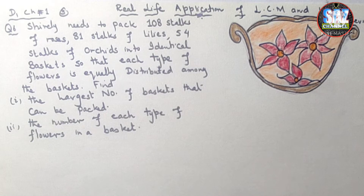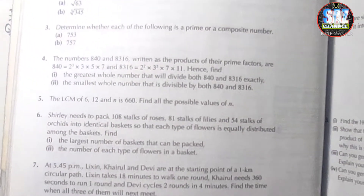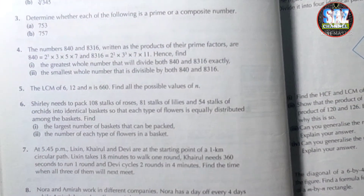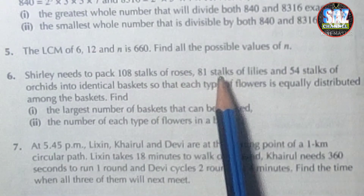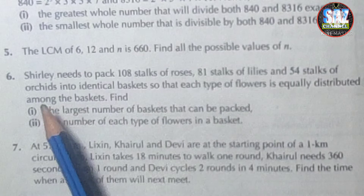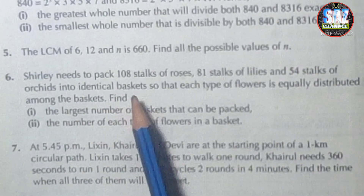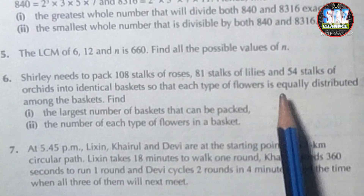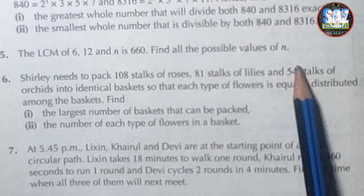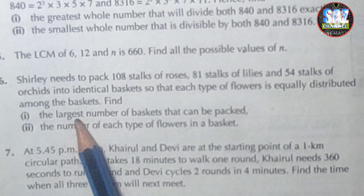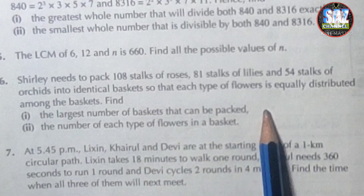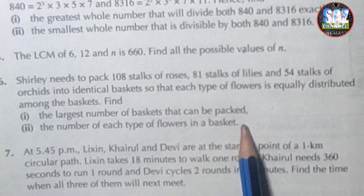The question I have selected for today's discussion is from Review Exercise 1, D1, page 23. Question 6 says that Sherry Lee needs to pack 108 stalks of roses, 81 stalks of lilies and 54 stalks of orchids into identical baskets so that each type of flower is equally distributed among the baskets. Find the largest number of baskets that can be packed and the number of each type of flower in the basket.